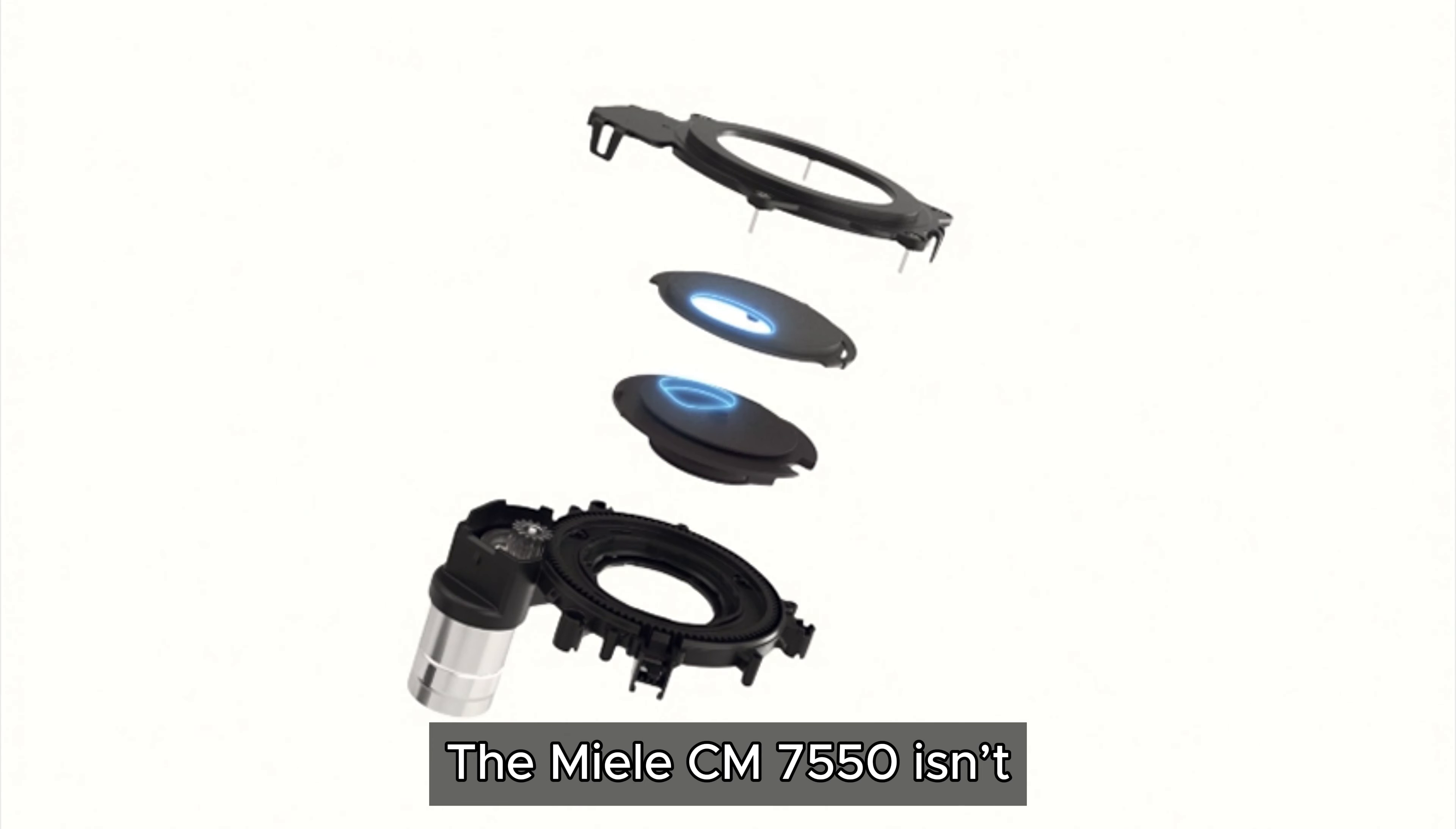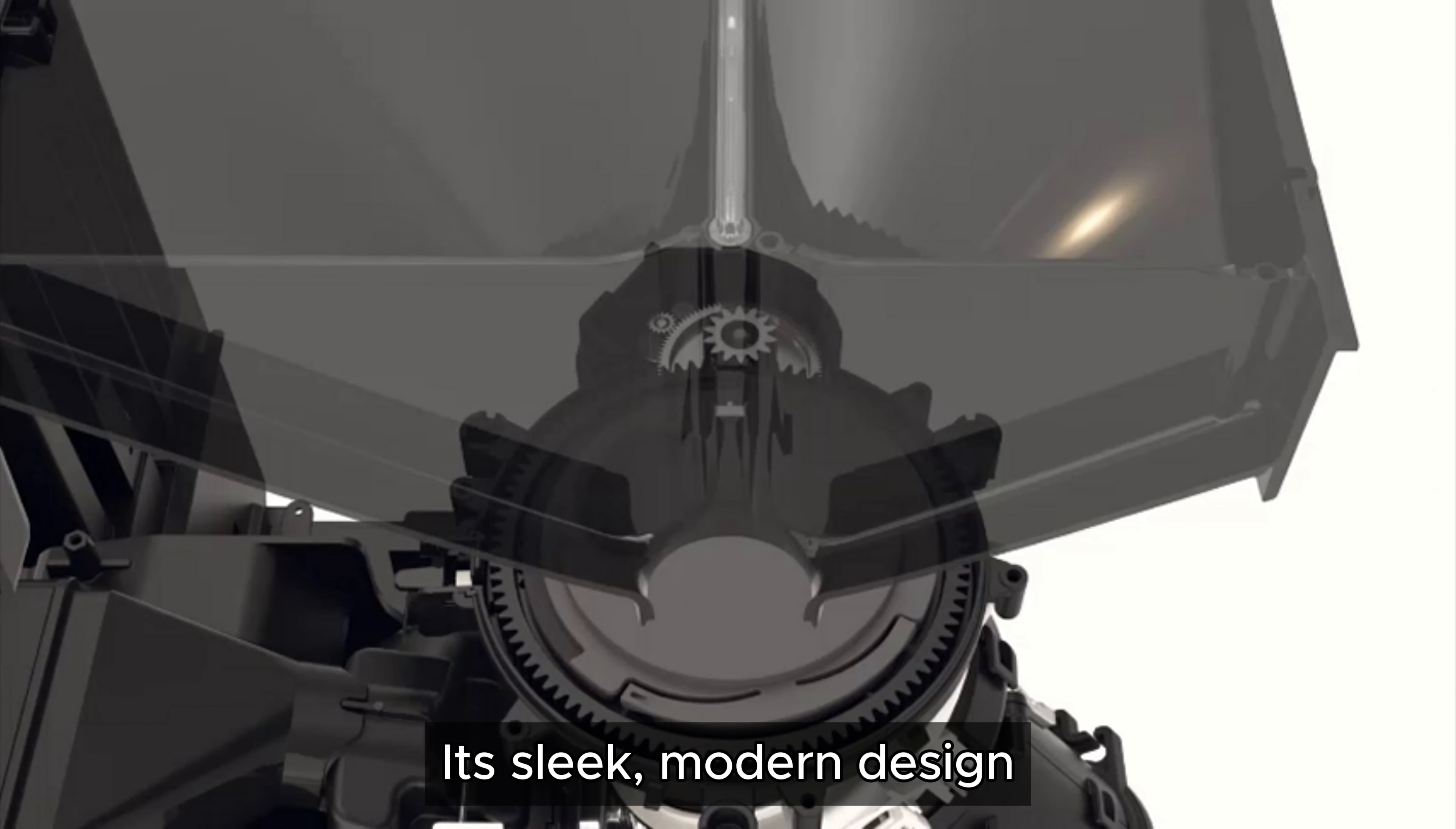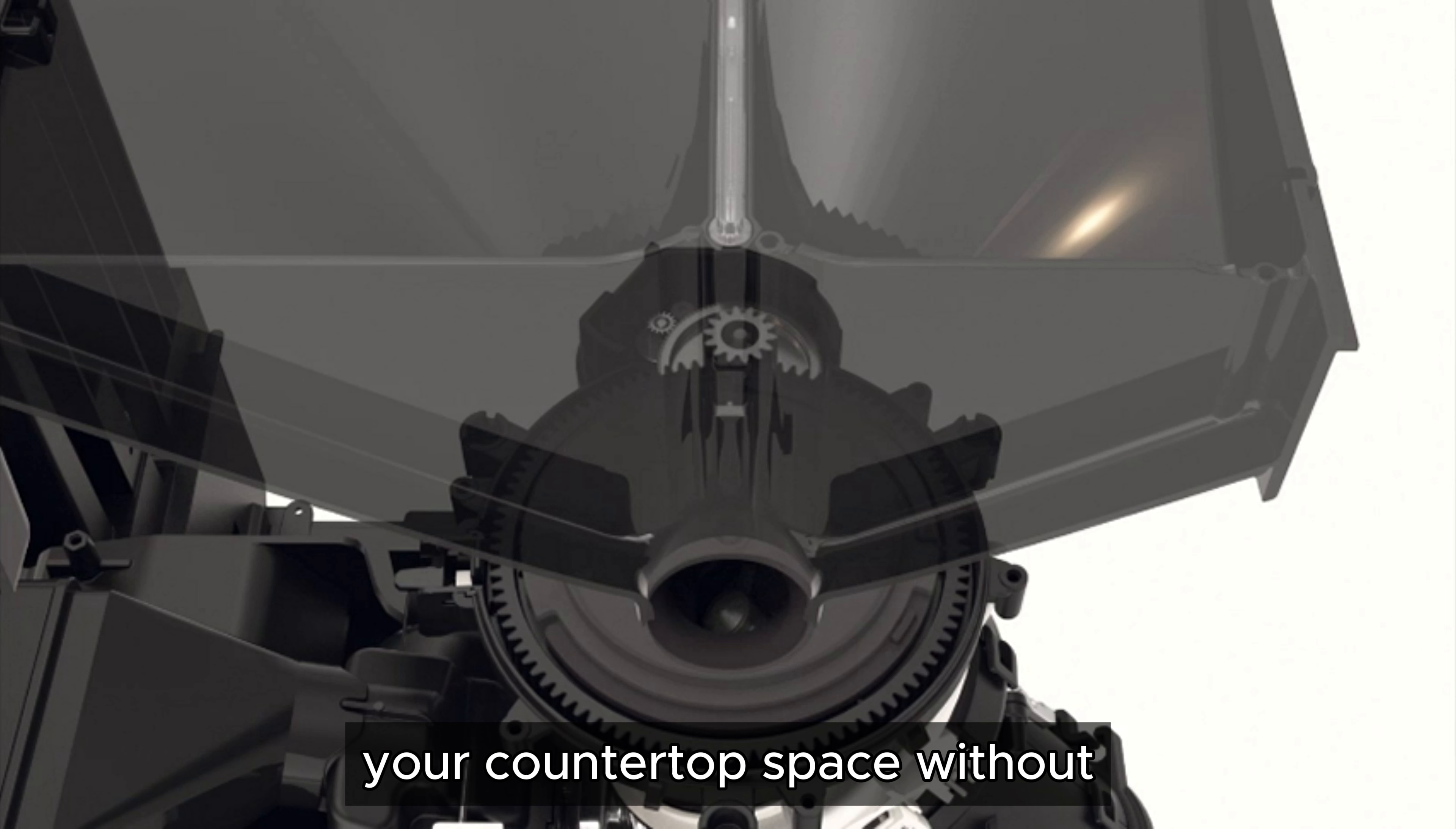The Miele CM7550 isn't just a coffee machine—it's a statement piece for your kitchen. Its sleek, modern design with clean lines and high-quality finish complements any decor. The machine's compact size ensures it fits seamlessly into your countertop space without dominating your kitchen layout.